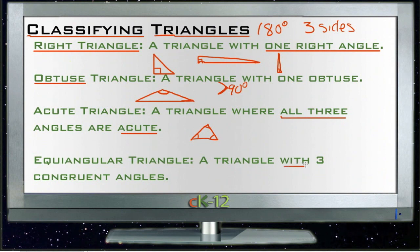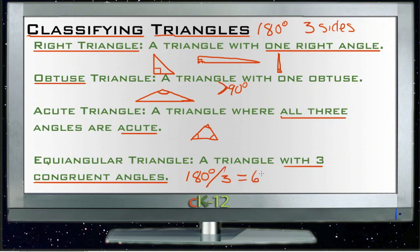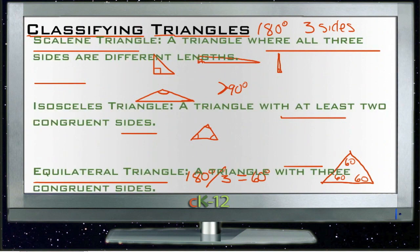An equiangular triangle is a triangle that has three congruent angles. In order for a triangle to have three congruent angles, you divide 180 degrees by three, which gives you 60 degrees each. So the equiangular triangle has three 60-degree angles: 60, 60, 60.